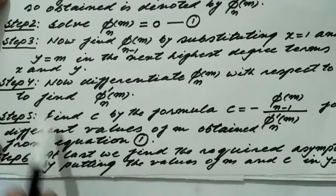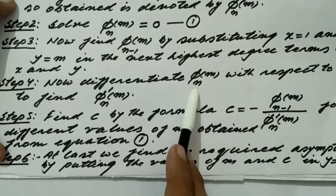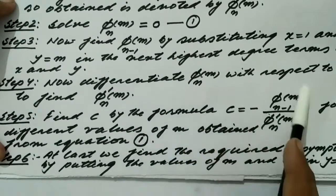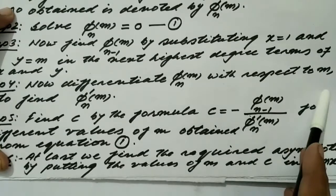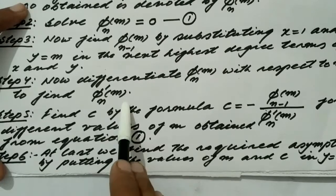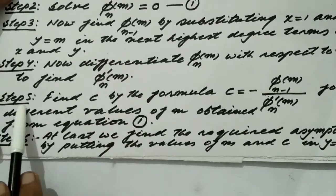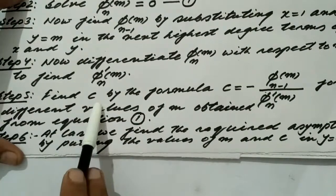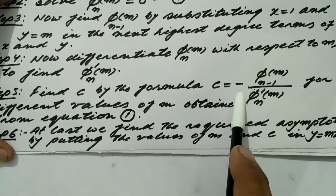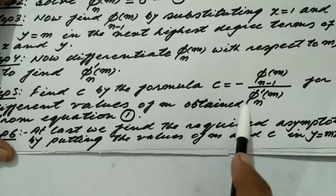Step 4: differentiate φₙ(m) with respect to m to find φ'ₙ(m). Step 5: find the value of c using the formula c = −φₙ₋₁(m) / φ'ₙ(m) for each value of m obtained from equation 1.